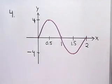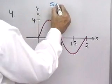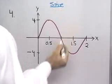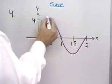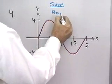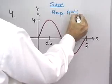This also looks like a sine curve, so I'm going to say, okay, it's a sine curve. My amplitude is 4, so that tells me that a is equal to 4.